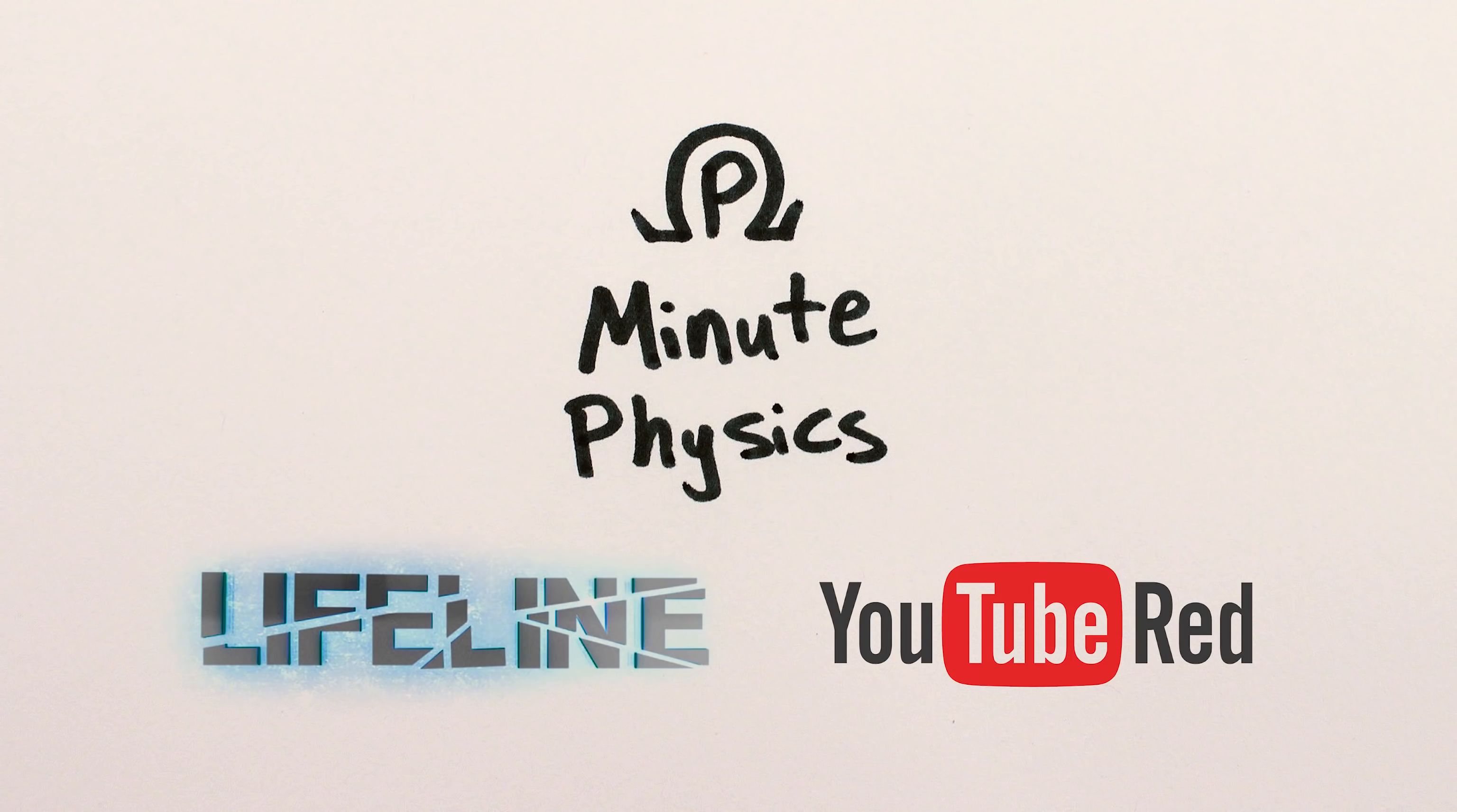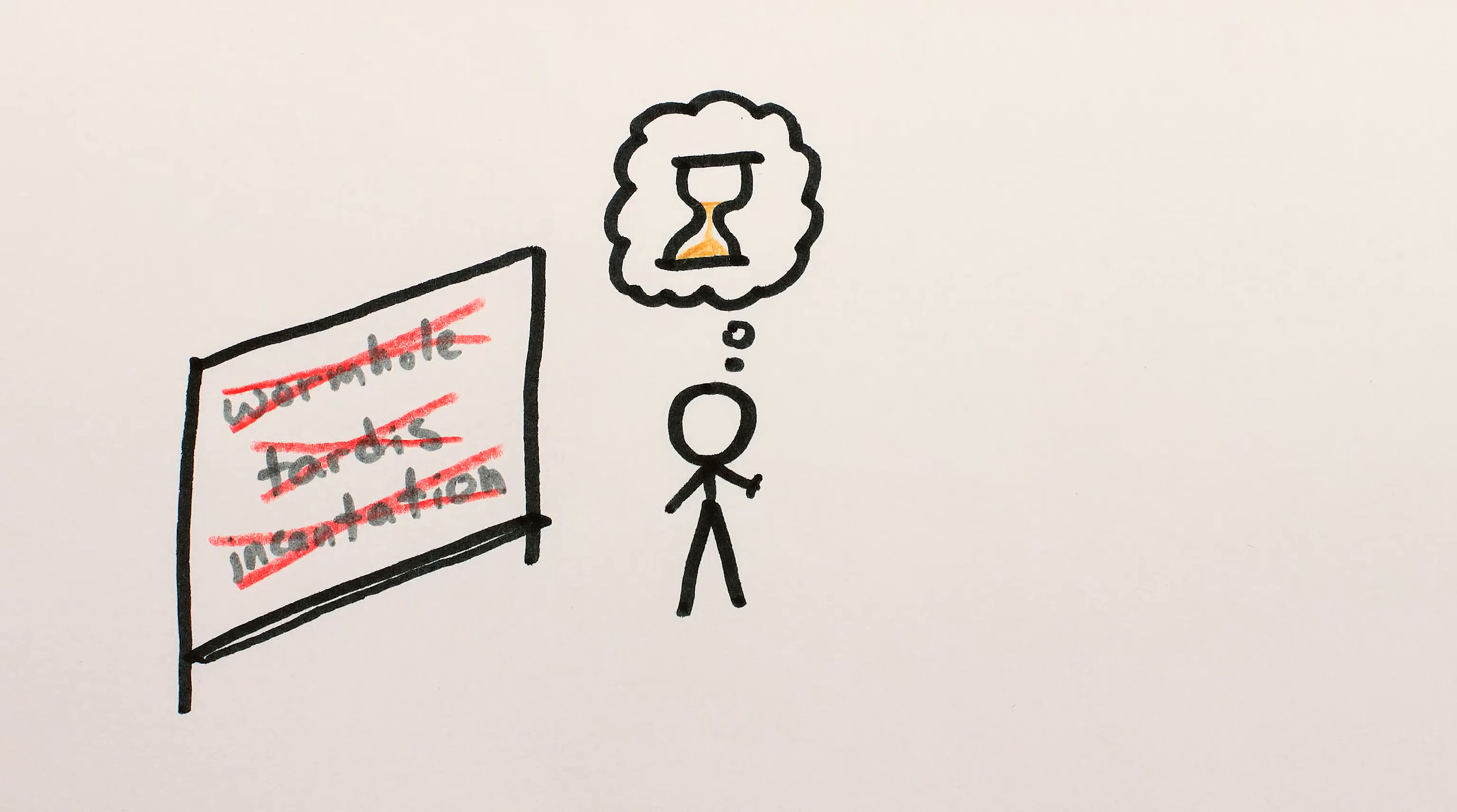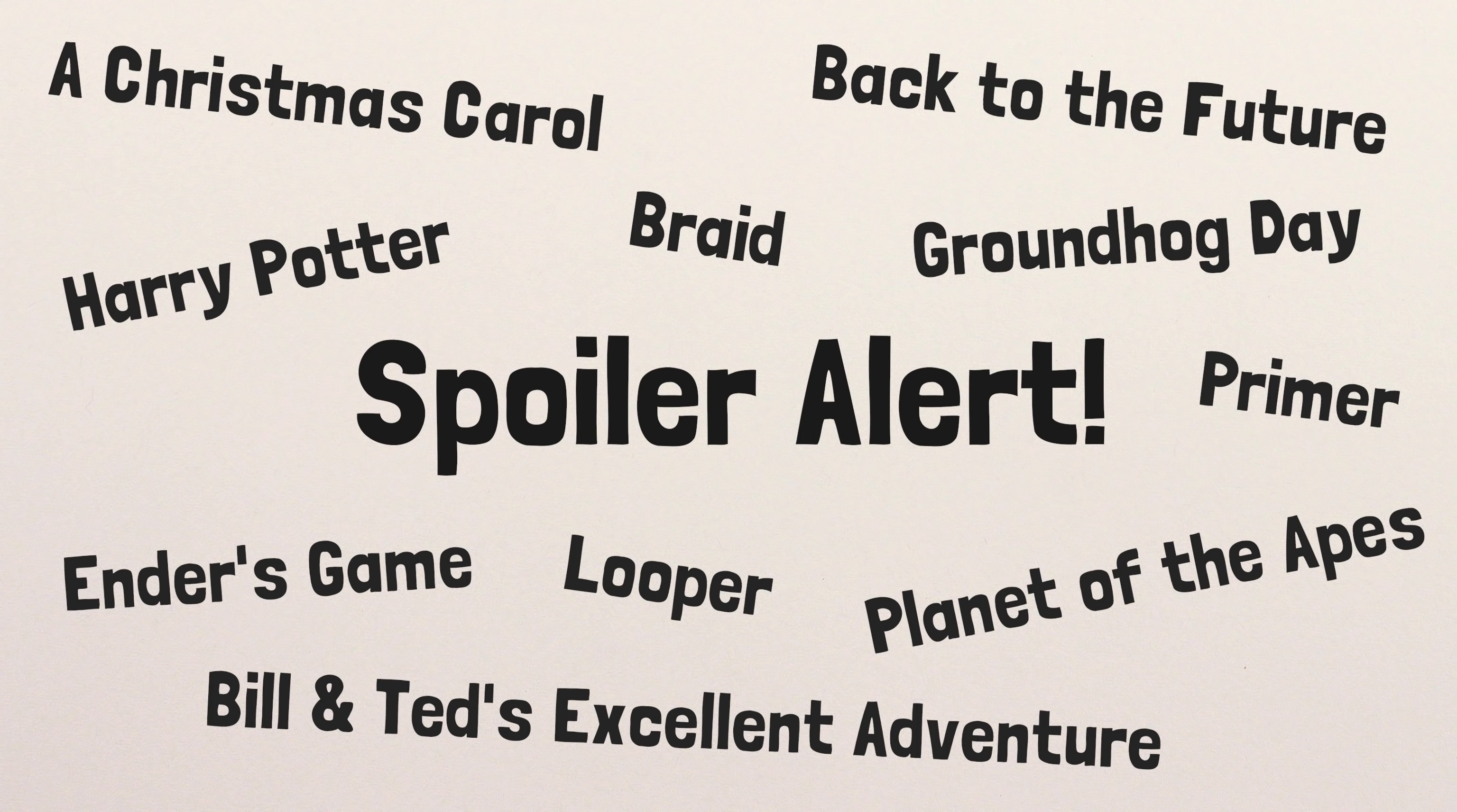This video is sponsored by the YouTube Red sci-fi series Lifeline. For ages, I've been wanting to make a video analyzing time travel in fiction – not the magical or physical mechanisms by which the time travel is supposedly achieved, but rather the different ways time travel can influence causality and thus the plot within the universe of each story. Needless to say, there are spoilers ahead.